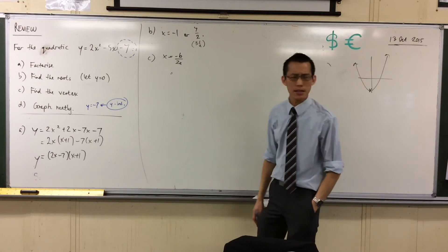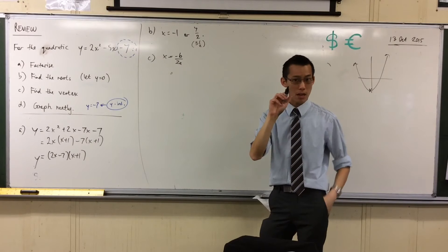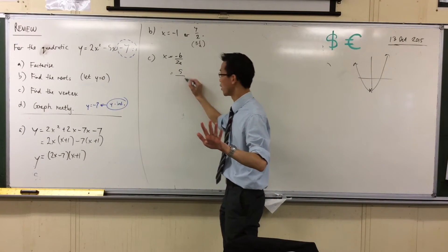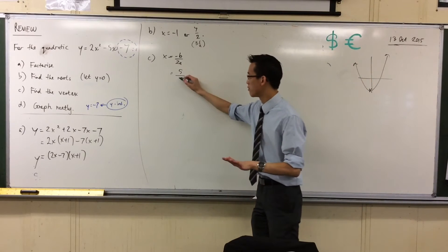What is minus b, in this case, on this quadratic? It's going to be positive 5. Do you see the double negative? Yeah, so 5 over. 2a, in this case, will be 4.